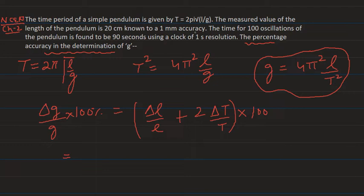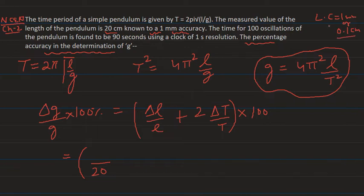The values given are: the pendulum's length is measured as 20 centimeters, and it is known to a 1 mm accuracy. So L = 20 cm and δL = 1 mm = 0.1 cm, which is the least count of the instrument.